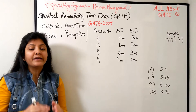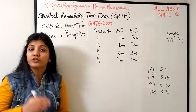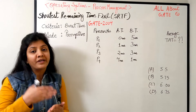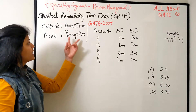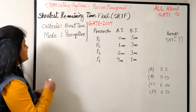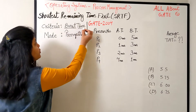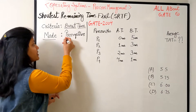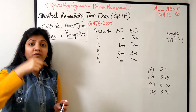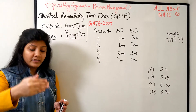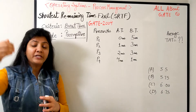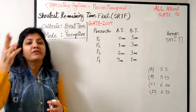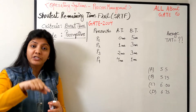So what is SRTF? SRTF works on the same criteria as the shortest job first. The only difference between shortest job first and SRTF is the mode of execution — SJF works on the non-preemptive mode and SRTF works on the preemptive mode. The criteria is burst time. You always have to look at the burst time of the process arriving in your ready queue. Because the mode of execution is preemptive, if you have already scheduled one process on the CPU — say P1 is running — and some other process P2 arrives in the ready queue with a shorter burst time requirement, then P1 will get preempted and P2 will be scheduled on the CPU.